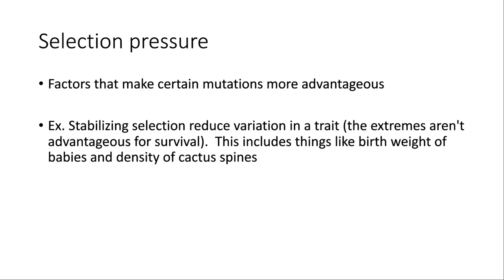A lot of times, mutations just aren't going to be advantageous or disadvantageous — a lot of times they just don't really impact natural selection at all. But every once in a while they do, and depending on the factors involved with whatever that mutation is, we can see selection occur in a variety of different ways — that's referred to as selection pressure. The factors that make certain mutations more advantageous and the direction in which selection occurs tells us something about those traits.